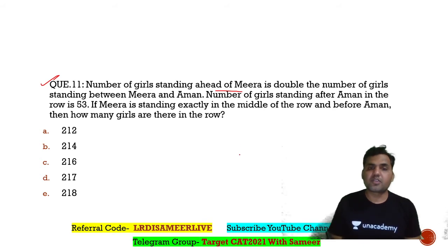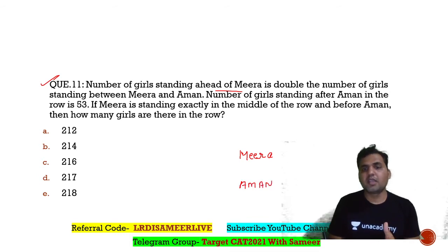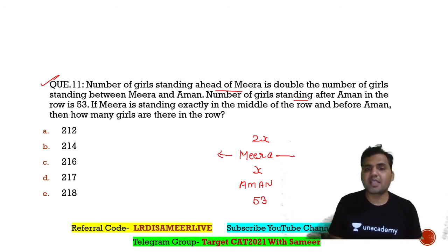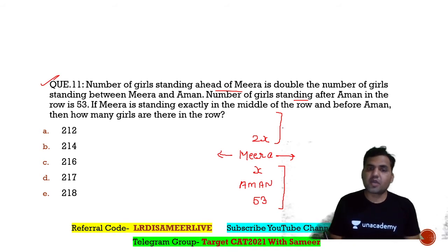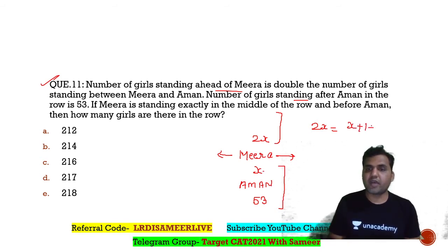Question number 11: The number of girls standing ahead of Mira is double the number of girls standing between Mira and Amal. Let x be the number of girls between Mira and Amal; then the number of girls ahead of Mira is 2x. The number of girls standing after Amal in the row is 53. Since Mira is exactly in the middle of the row, the number of people ahead of Mira equals the number behind her. So: 2x = x + 1 (Amal) + 53, giving x = 54.